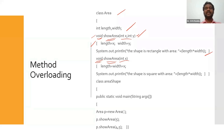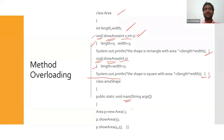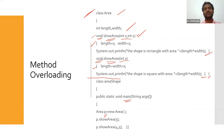We have two different showArea methods defined in the class Area. The class Area is then closed. The main class 'AreaShape' contains the main method. An object 'p' is created for class Area, which allocates memory for length, width, and the showArea methods. The object p can access the variables and the methods.